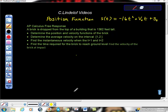AP calculus free response. A brick is dropped from a building that is 1362 feet tall. So it's dropped. If it's dropped, what you're supposed to take from this is that its initial velocity is zero. It's being dropped. They're also going to provide you with one of a couple position functions.